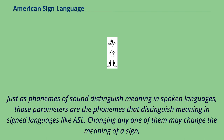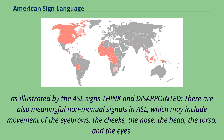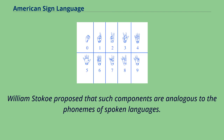As illustrated by the ASL signs 'think' and 'disappointed,' there are also meaningful non-manual signals in ASL, which may include movement of the eyebrows, the cheeks, the nose, the head, the torso, and the eyes. William Stokoe proposed that such components are analogous to the phonemes of spoken languages. There has also been a proposal that they are analogous to classes like place and manner of articulation.